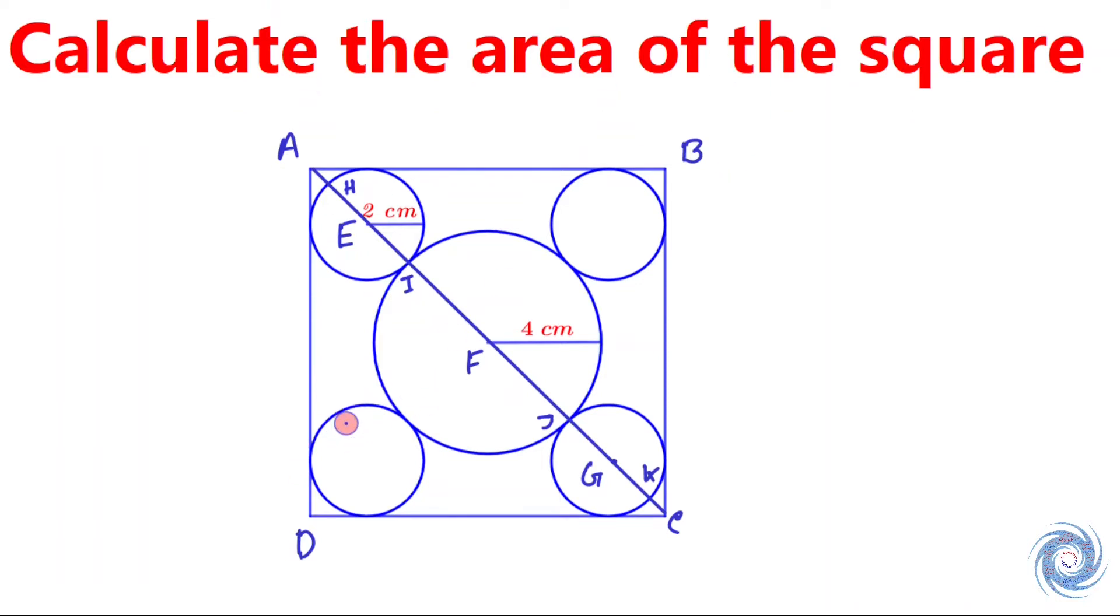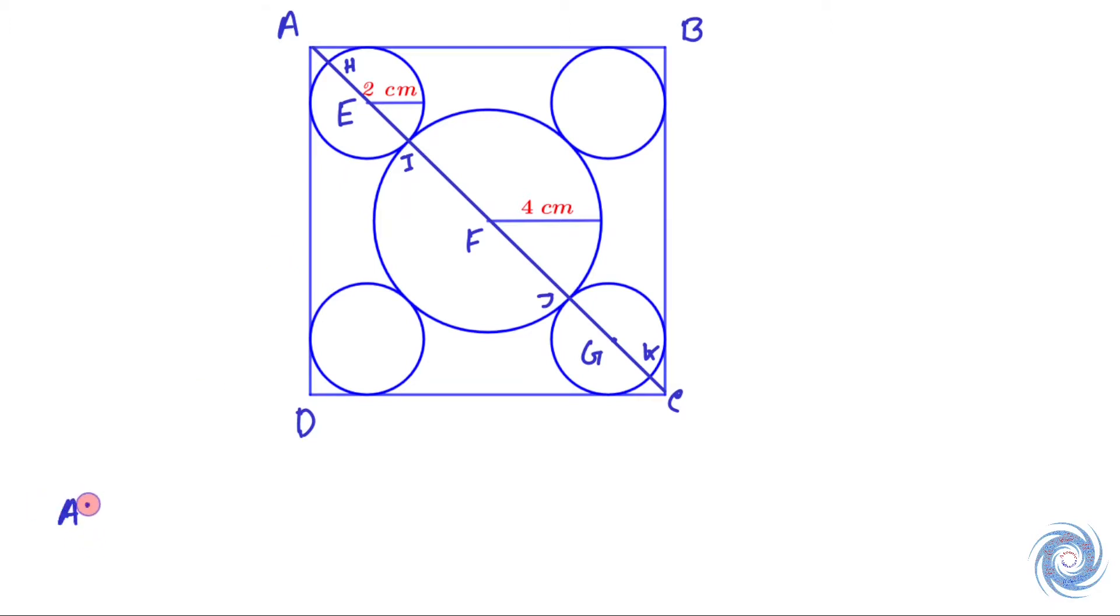Now AC can be written as the sum of its segments. To calculate the length of AC, we need to know the length of AH first.